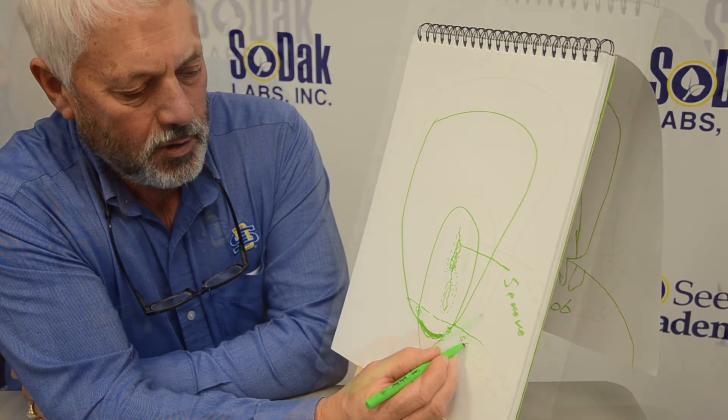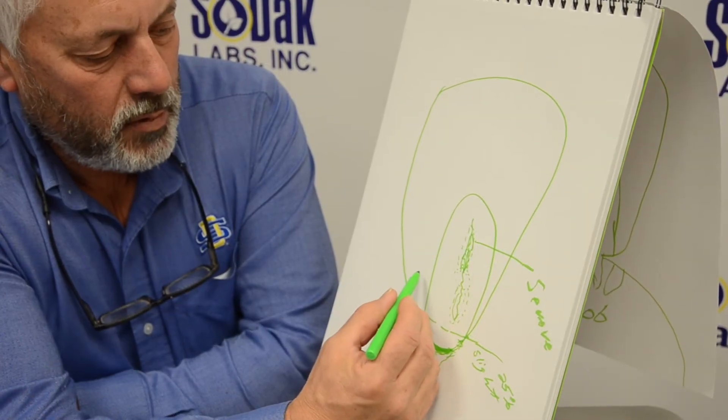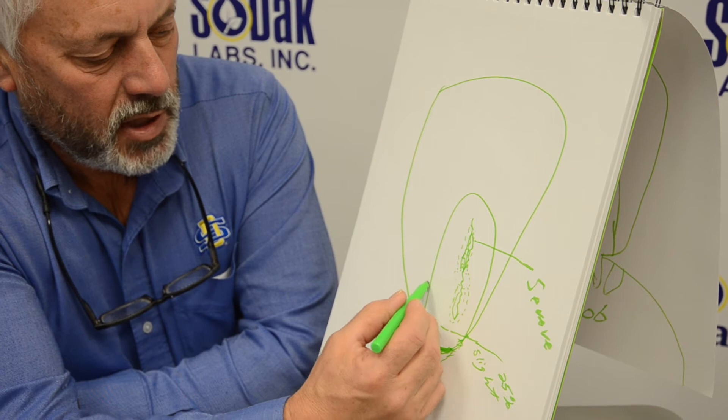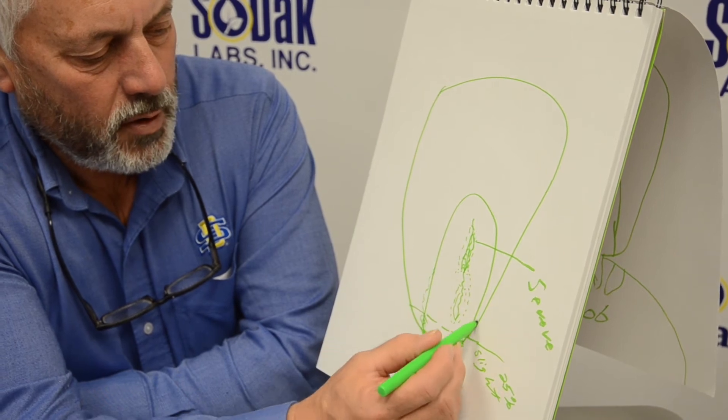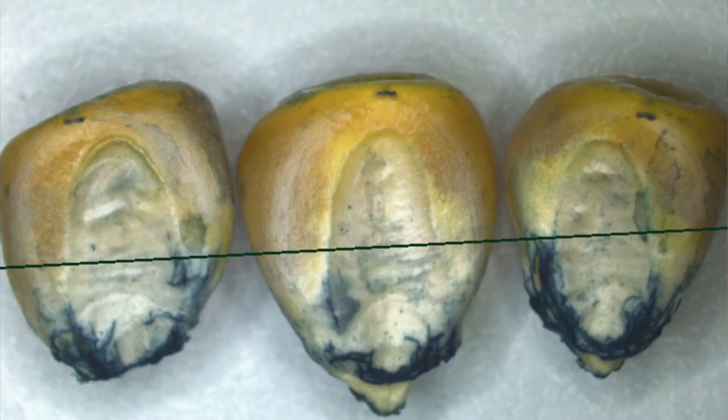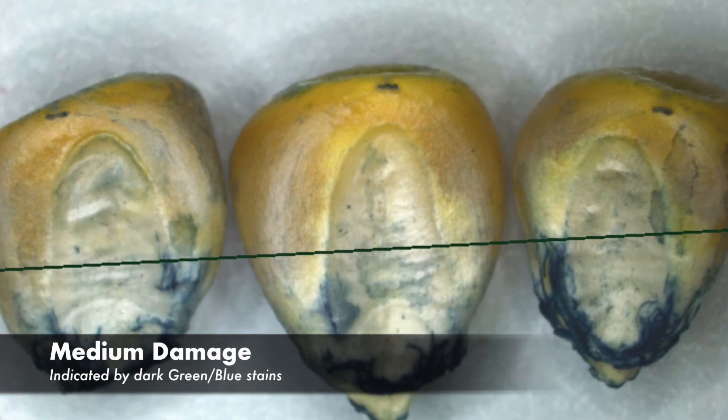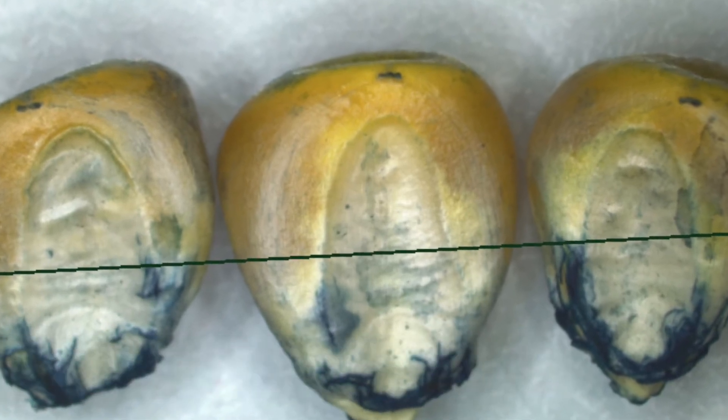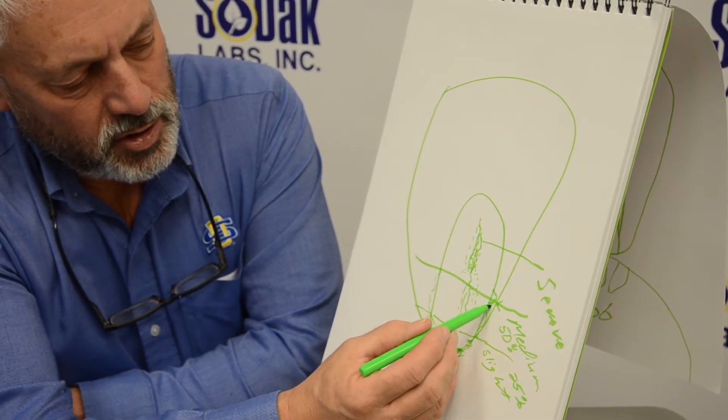And then we can get medium pericarp tearing where the tearing is going up further on the germ face, and we would rate that as medium.